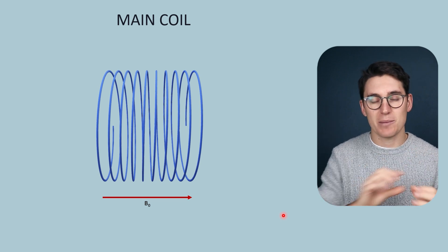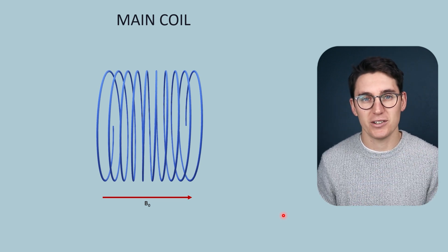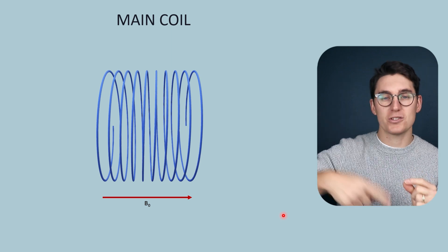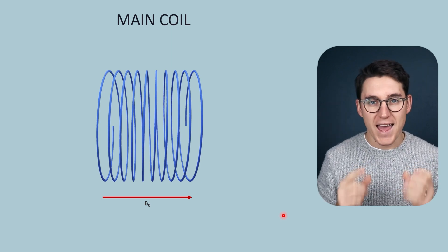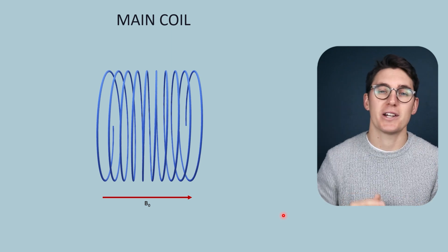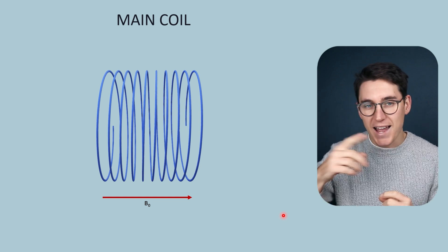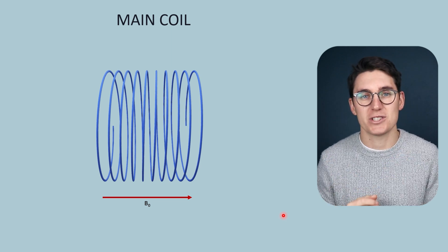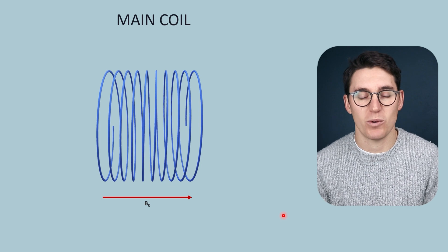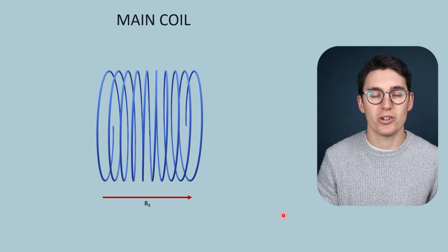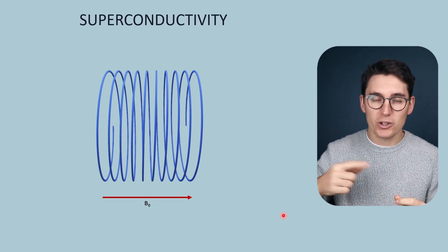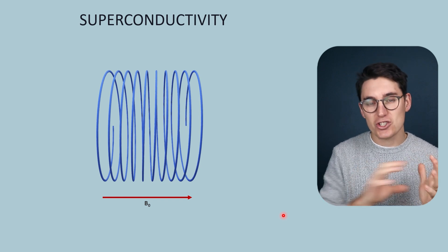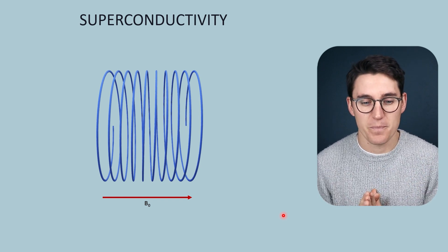The strength of that main magnetic field is dependent on two factors: the number of coils of wire and the amount of current running through that wire. As we increase current more and more we will get increased resistance within that wire, and we need to use what is known as a superconductor in order to generate sufficient current to allow us to have a strong enough magnetic field strength.